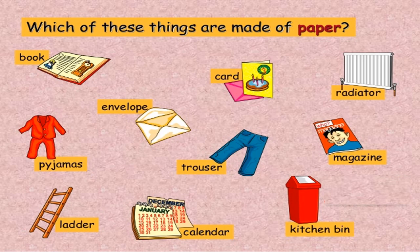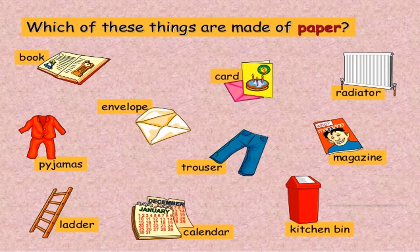To help you understand this activity, here is a question: Which of these things are made of paper? Different items are shown here, and you are supposed to select those items which are made up of paper. The answers are: book, envelope, card, magazine, and calendar. Yes, you are all right.